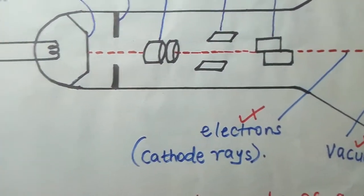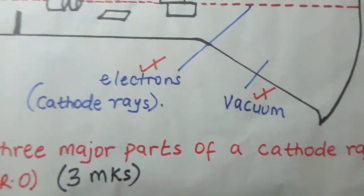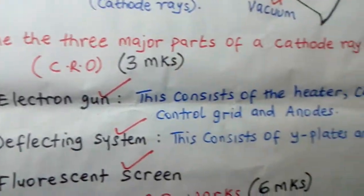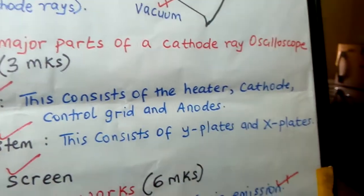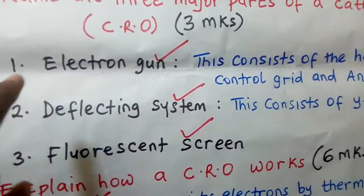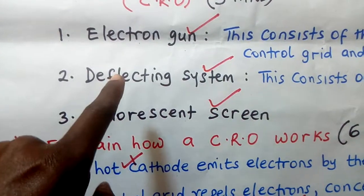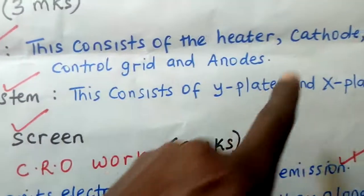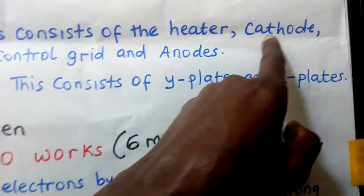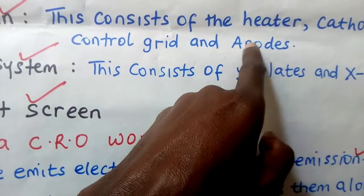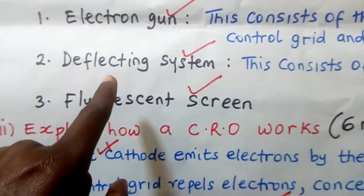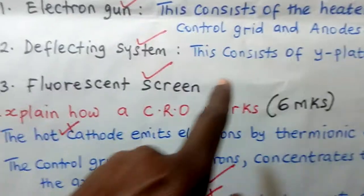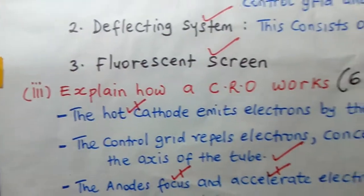Name the major parts of a cathode ray oscilloscope — there are three, worth three marks. The first one is electron gun. The second one is deflecting system. The third one is fluorescent screen. What makes up the electron gun? It consists of the heater, the cathode, the control grid, and the anodes. What makes up the deflecting system? The Y plates and the X plates. Then the fluorescent screen is alone.